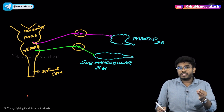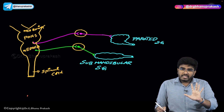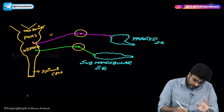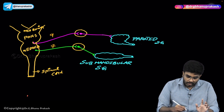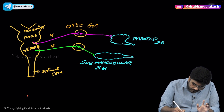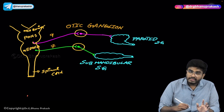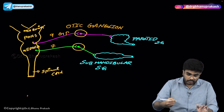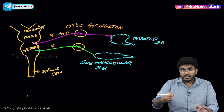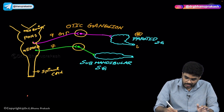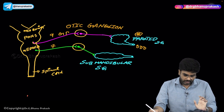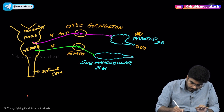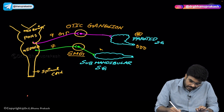Which parasympathetic neurons supply the salivary glands? The answer is the ninth cranial nerve (glossopharyngeal nerve) and the seventh cranial nerve. The glossopharyngeal nerve comes out of the brain stem, goes to the otic ganglion, where the preganglionic fibers terminate, and the postganglionic fibers go to the parotid gland to produce saliva. The seventh cranial nerve innervates the submandibular ganglion, and from there postganglionic neurons innervate the submandibular salivary gland to produce saliva.